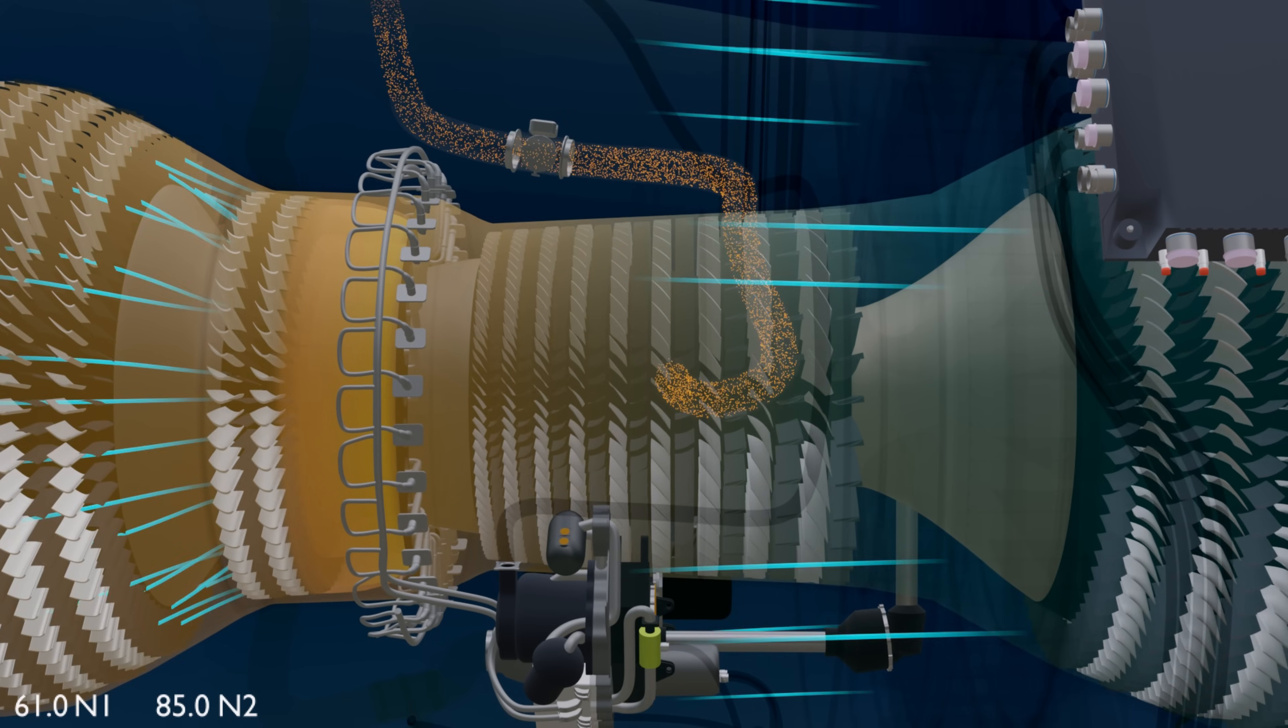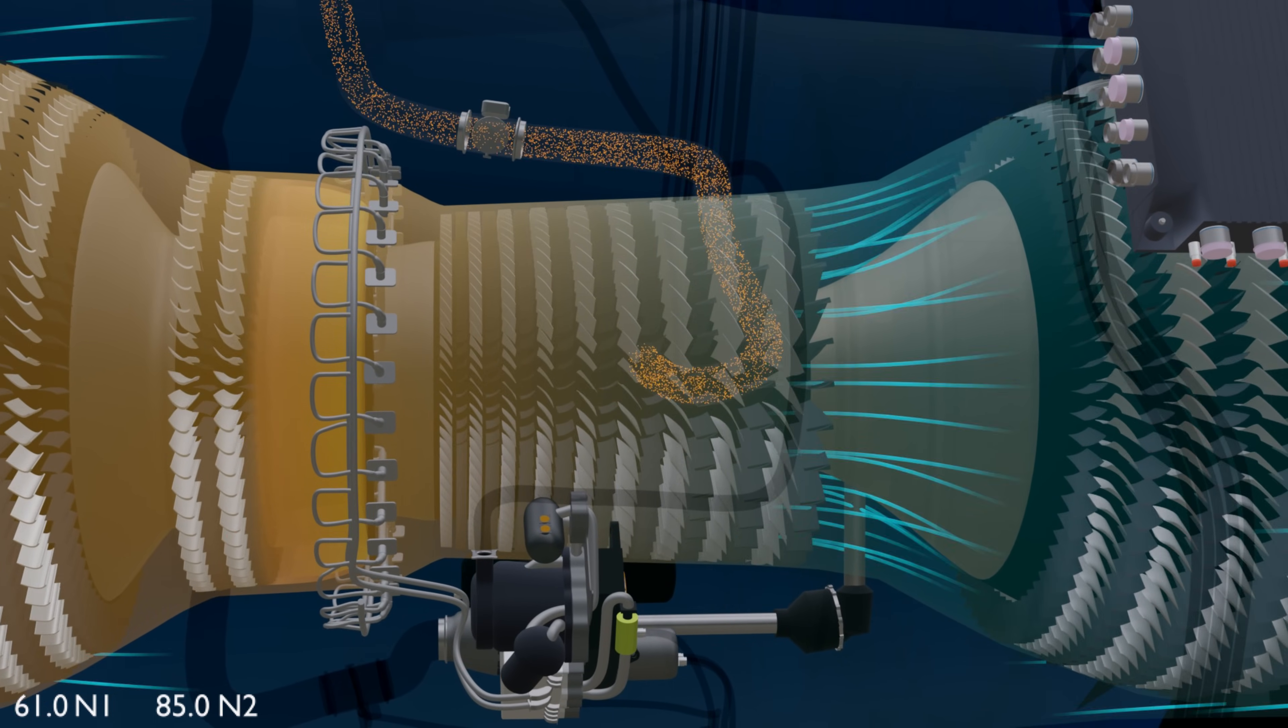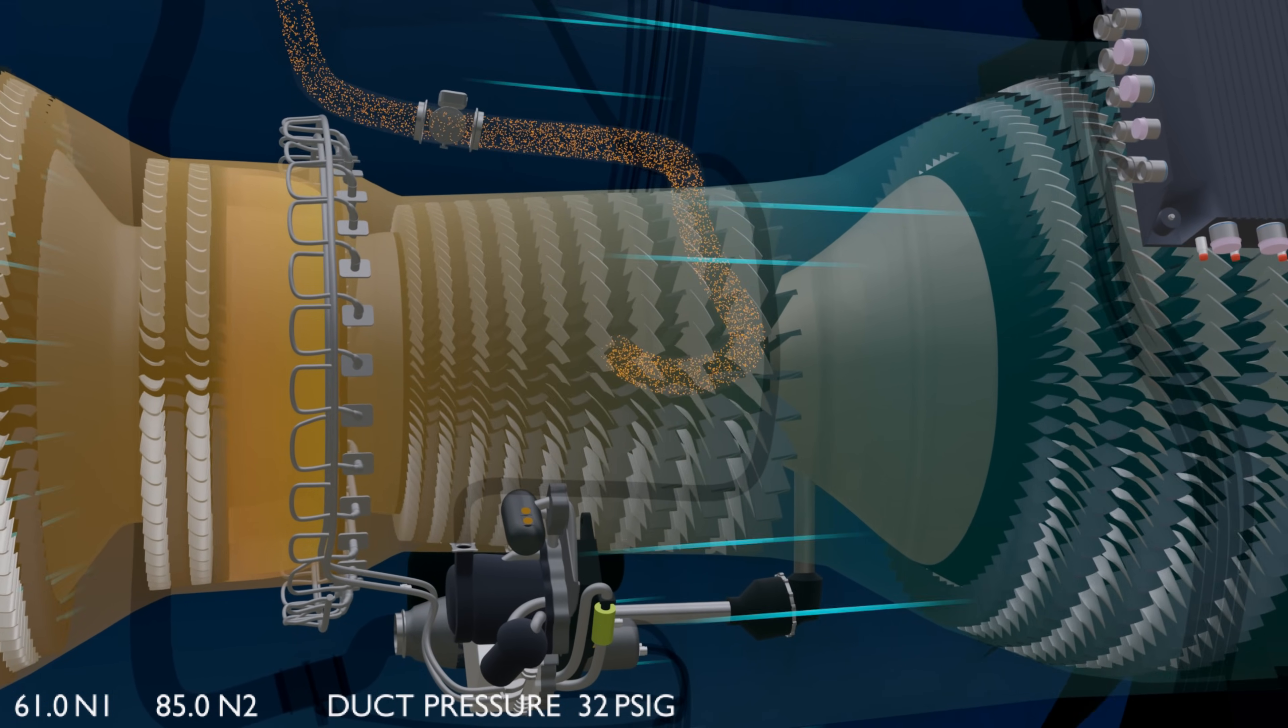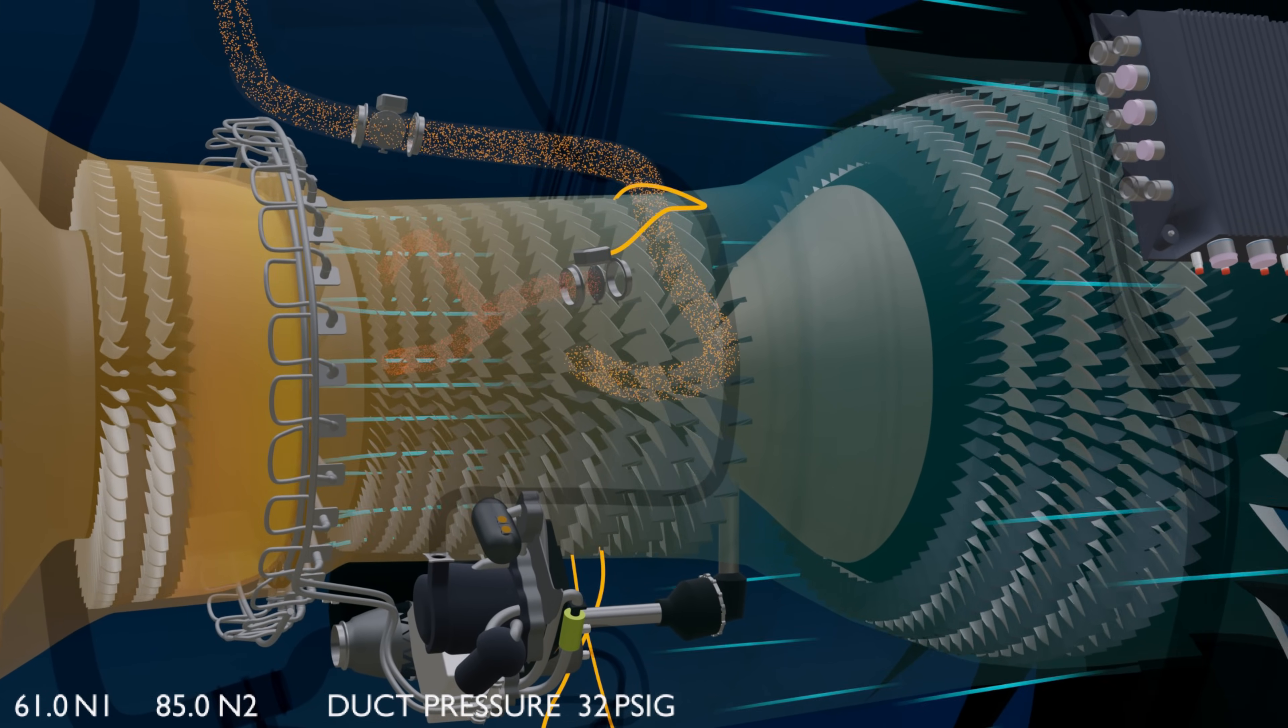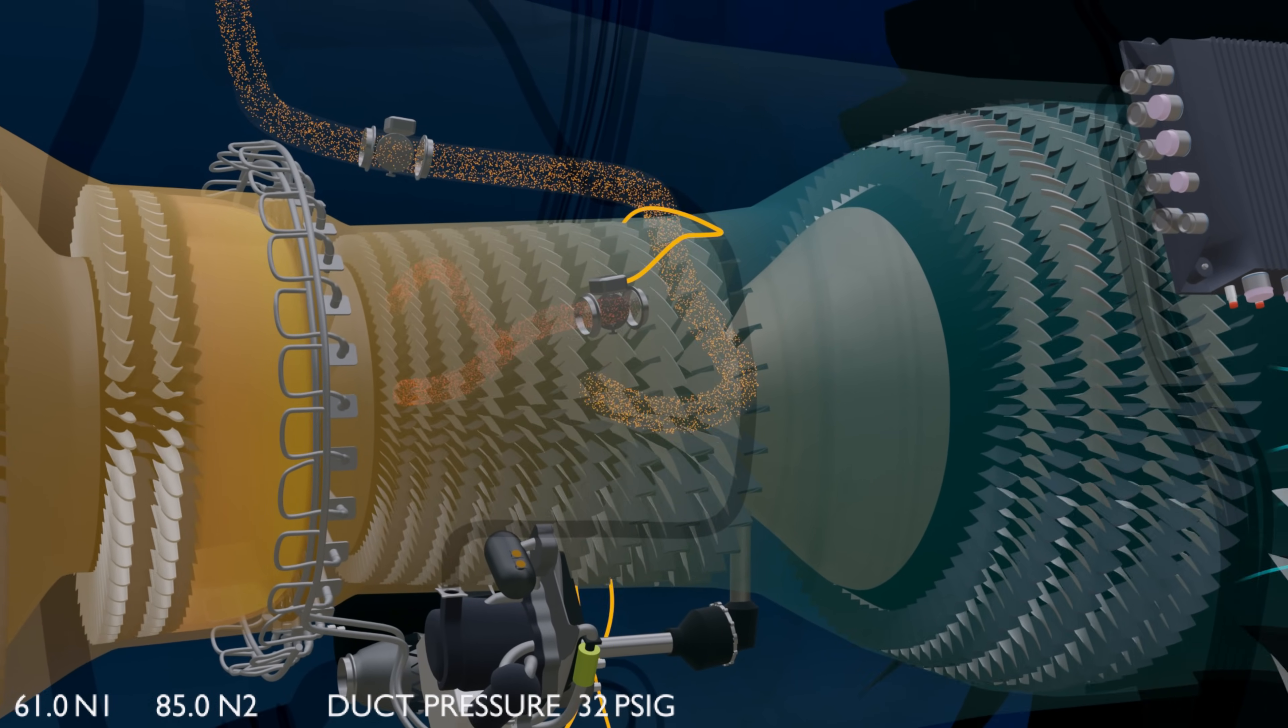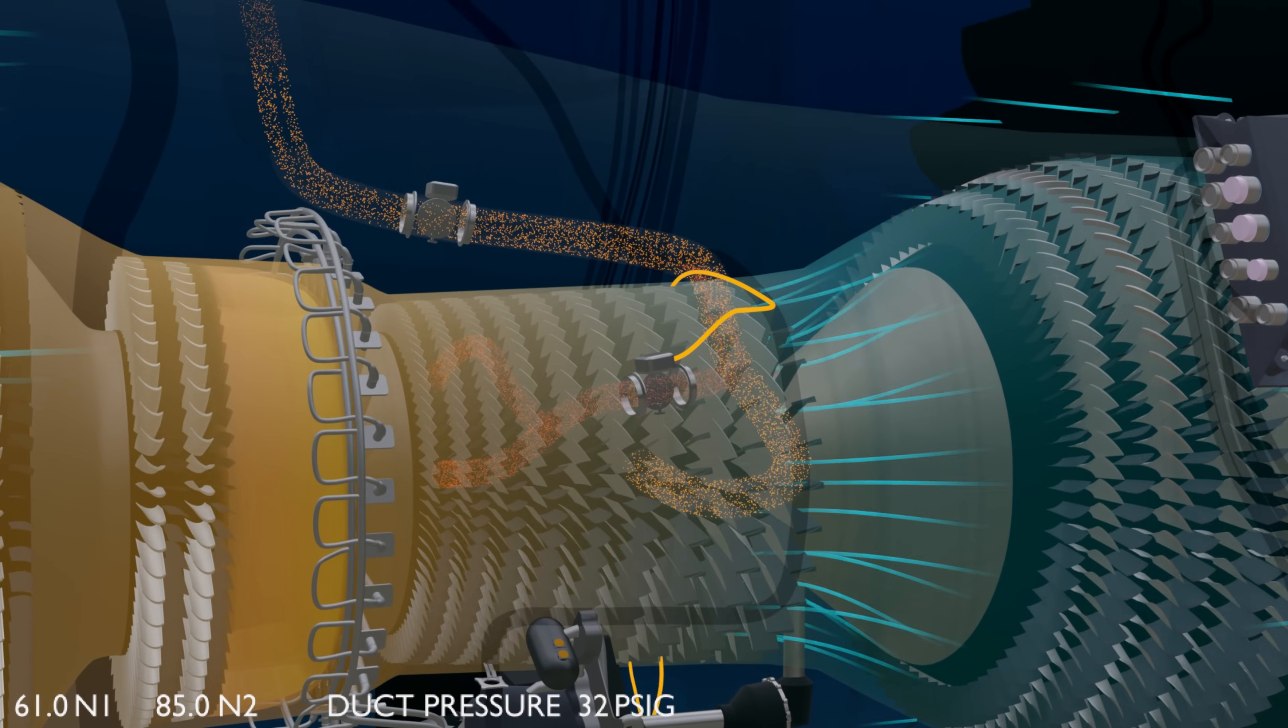In order to meet the demands of all aircraft pneumatic loads, the distribution duct must have 40 pounds per square inch gauge pressure. If the pressure of the bleed is insufficient, then the controller commands the high pressure shutoff valve to open, and the bleed from the ninth stage of the high pressure compressor gets added.